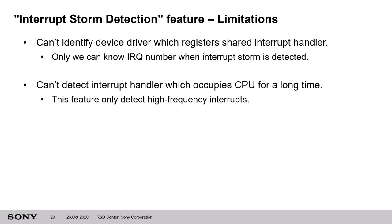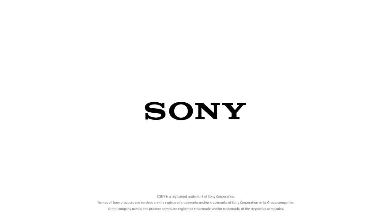Finally, I will talk about the Interrupt Storm Detection feature limitations. This feature can't identify device drivers which use shared interrupt handlers — we can only know the IRQ number when an interrupt storm is detected, so if that IRQ is shared, we need to do additional investigation to identify the device driver. Another limitation is that this feature can't detect an interrupt handler which occupies the CPU for a long time. In that case, the interrupt is not high frequency, so this feature can't detect it as an interrupt storm. In the future, I will submit this feature to the Linux kernel mainline. Thank you for listening to my presentation.